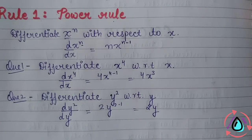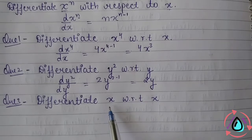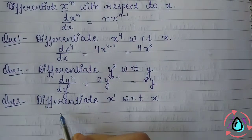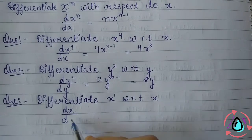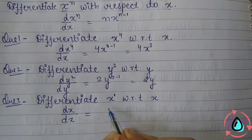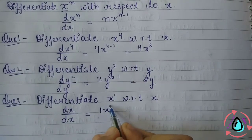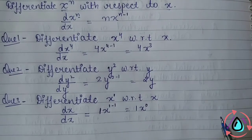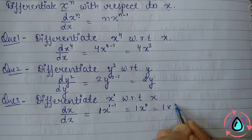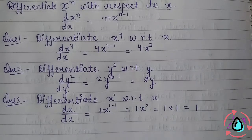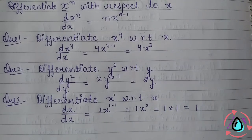Another question: differentiate x with respect to x. Since there is no explicit power, we treat x as x^1. So d(x^1)/dx: the power 1 comes forward, and the power becomes 1−1=0. Since x^0 = 1, the answer is 1×1 = 1. So whenever we differentiate any variable with respect to itself (with no given power), the answer is always 1. For example, dy/dy = 1, dz/dz = 1.